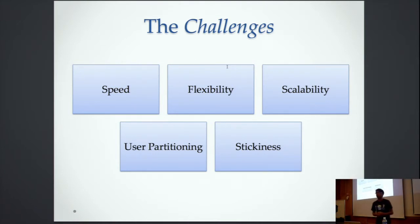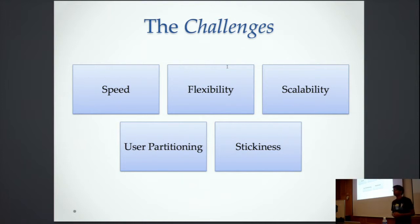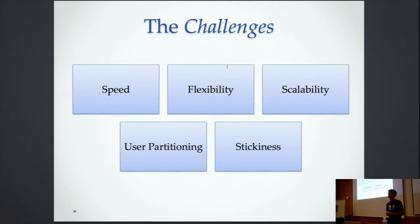Flexibility — we have a variety of apps: Android, iOS, and more — and we need one framework to run experiments on them all. Scalability — we have millions of users at WIKI, so we need the framework to scale. Two important characteristics of any A/B testing platform are user partitioning and stickiness. By user partitioning, you want to run your A/B test on a certain percentage of users — you can't run a variation on 100% of users, so you partition users into buckets. By stickiness, as long as an experiment is running, a user needs to see the same variation throughout the entire test period; otherwise your results won't be accurate.